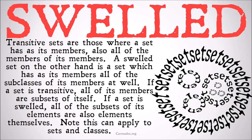Transitive sets, which we learned about in the last video, are those where a set has as its members all of the members of its members. A swelled set, on the other hand, is a set which has as its members all of the subclasses of its members as well. If a set is transitive, all of its members are subsets of itself. If a set is swelled, all of the subsets of its elements are also elements themselves.